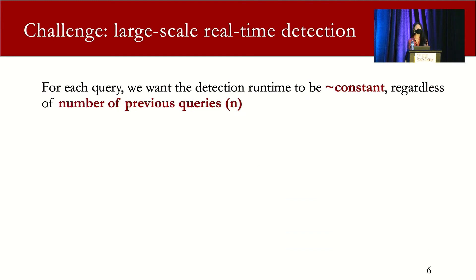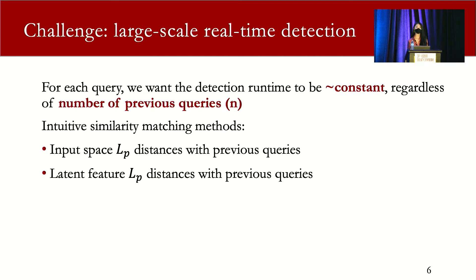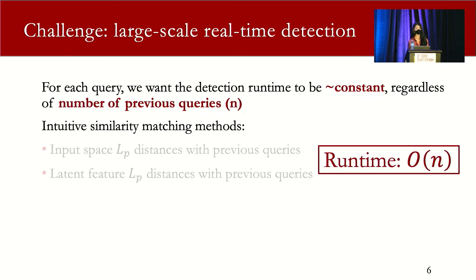Ideally, for each query, we want the detection runtime to be near constant, no matter how many previous queries we want to compare with. There are several intuitive ways to do query similarity comparison. For example, we can compare the input space LP distance between the current query and all previous queries. Or instead of looking at the input space distance, we could look at a few latent features distance. However, both of these methods have a runtime of O(N), where N is the number of previous queries, and they are not scalable. So we need a new similarity metric allowing fast comparison.